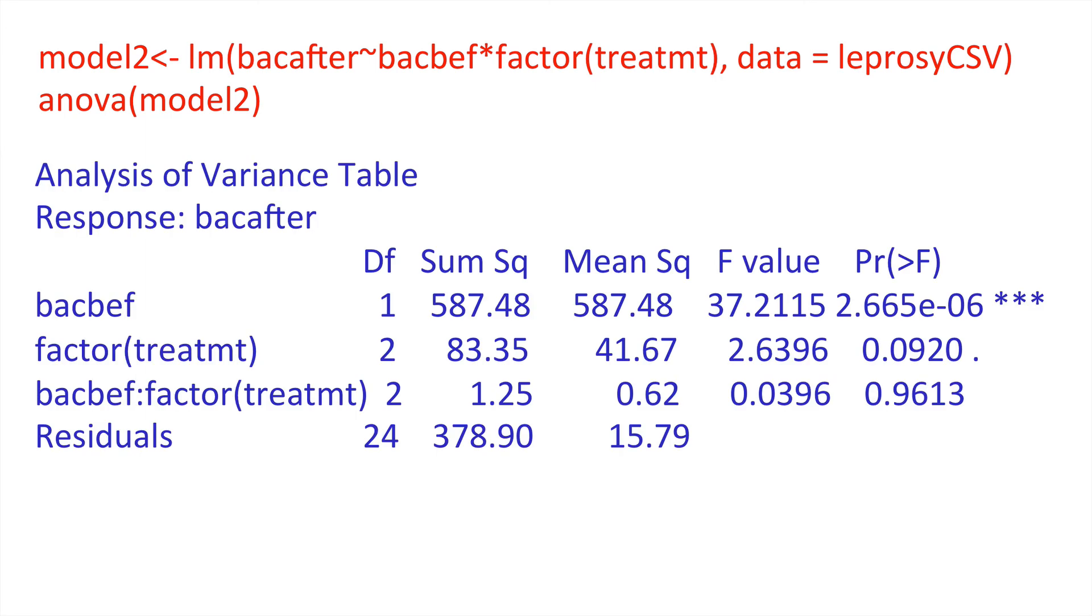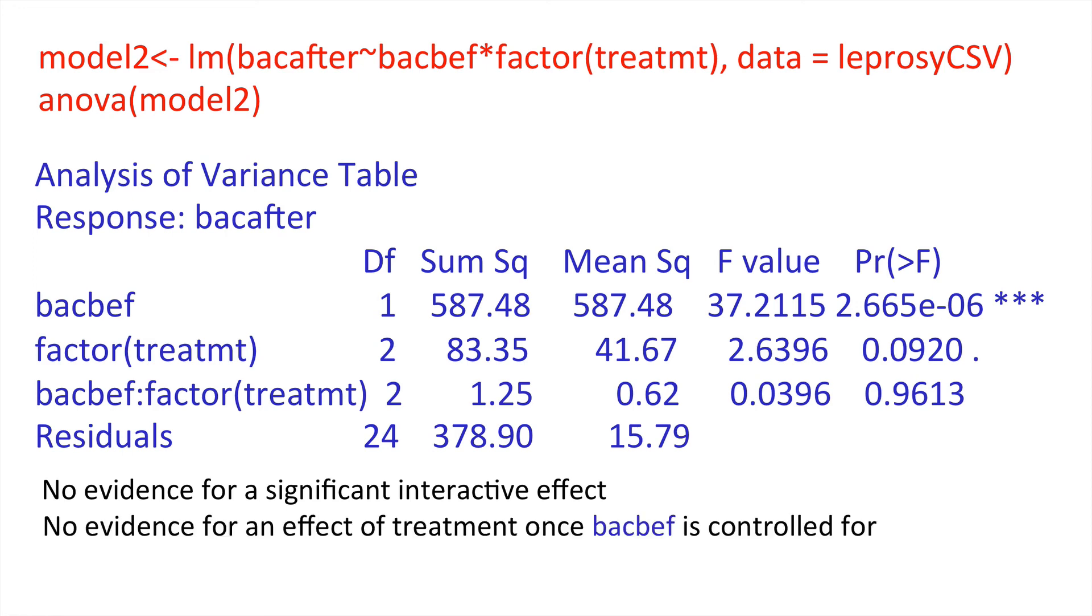What can we conclude from this? I find it's useful to work from bottom up, beginning with interactions and then moving up through the different levels, particularly when dealing with a type 1 sum of squares where order really does matter. There's no evidence for a significant interactive effect in that here we have a value which is relatively high. So we're not really rejecting the null hypothesis there. There's also no evidence for an effect of treatment once back before is controlled for.